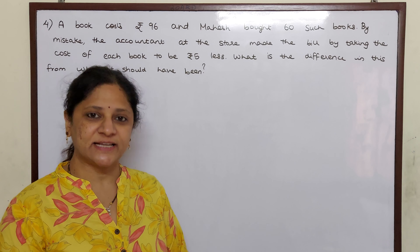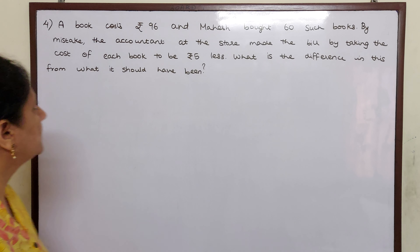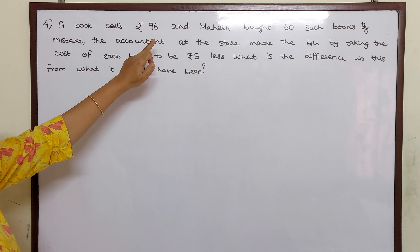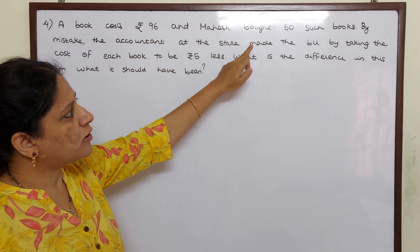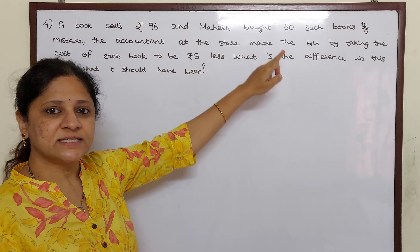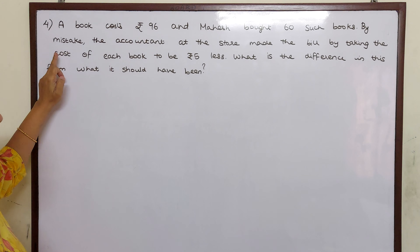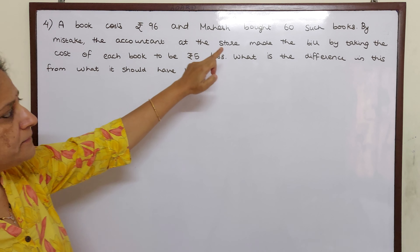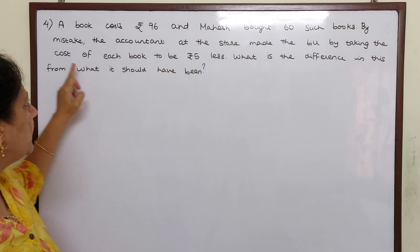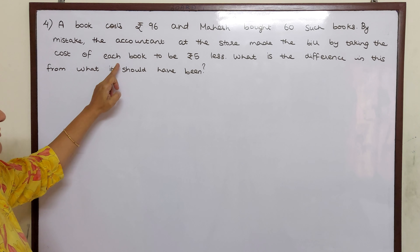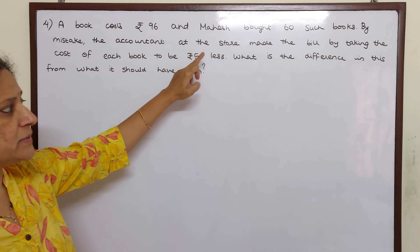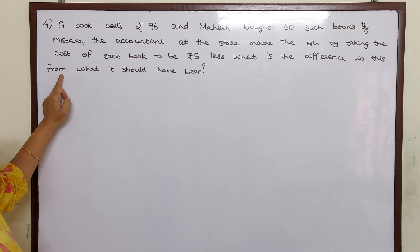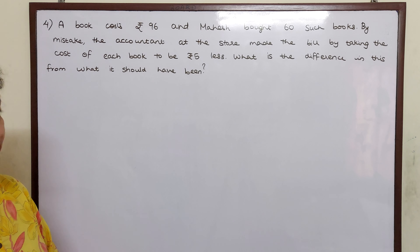Hello children, let us move to the next word problem. A book costs rupees 96 and Mahesh bought 60 such books. By mistake, the accountant at the store made the bill by taking the cost of each book to be 5 rupees less. What is the difference in this from what it should have been?